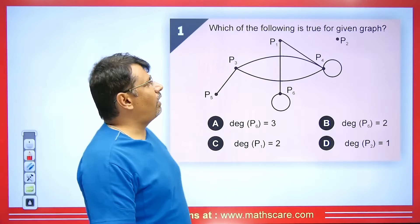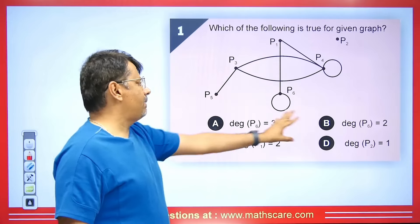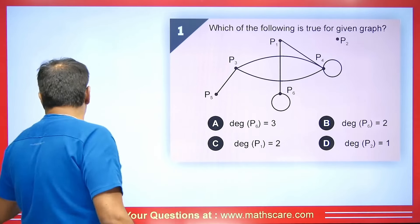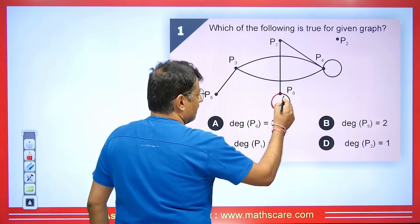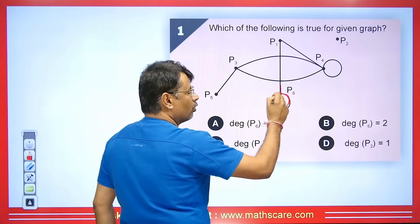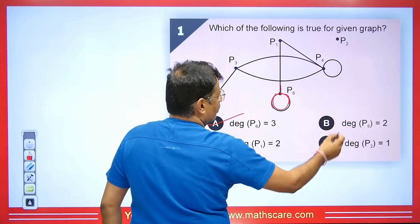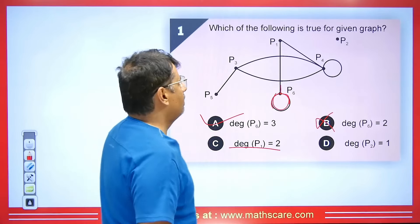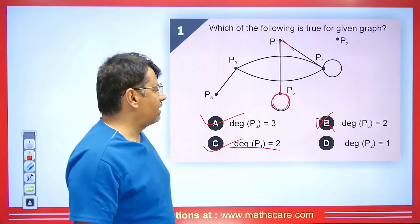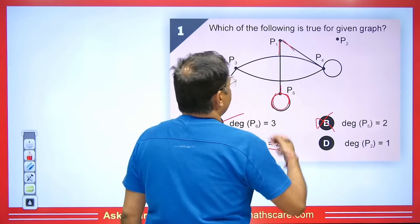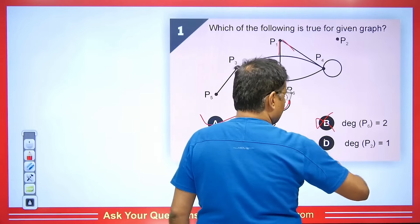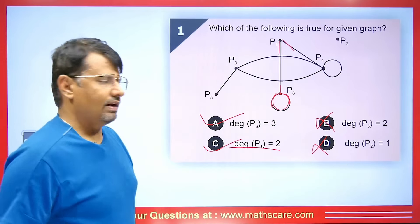Let's see the first question: which of the following is true for the given graph? It says degree of P6 is 3. Checking P6: it has edges 1, 2, and a self-loop counted as 2, giving 2 + 1 = 3. So that is correct. For P1, it connects with two edges, so degree is 2. For P2, it is an isolated vertex with degree 0, so the statement that its degree is 1 is wrong.